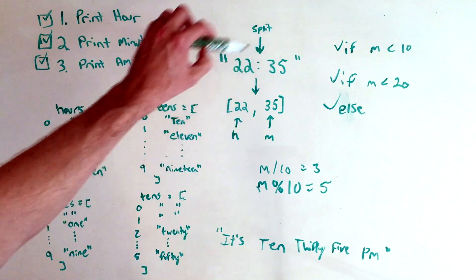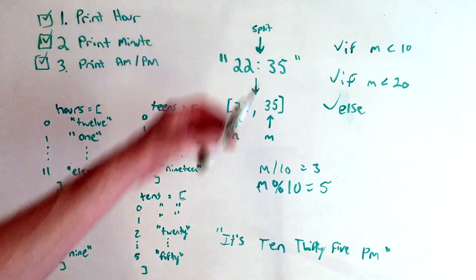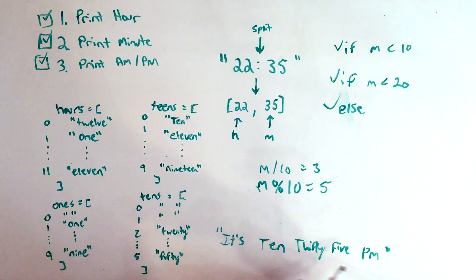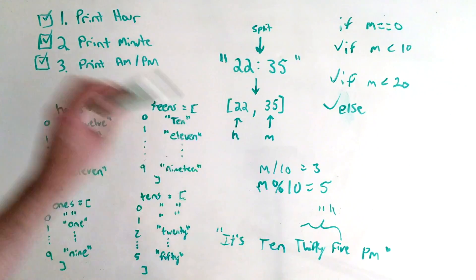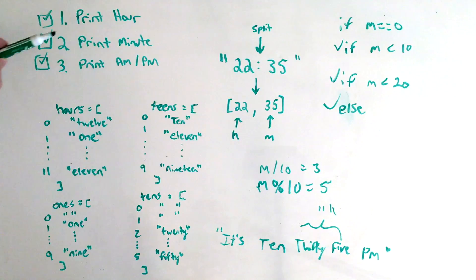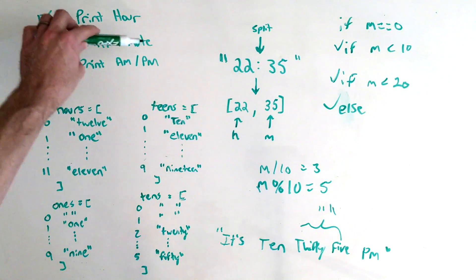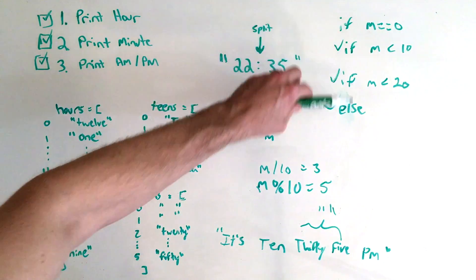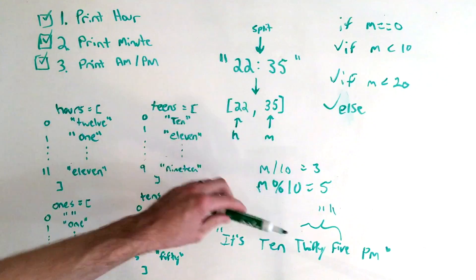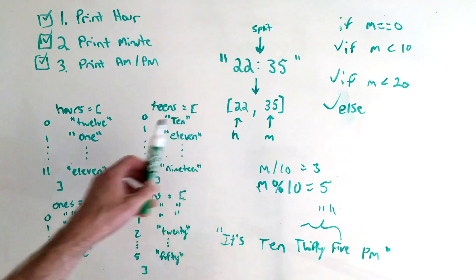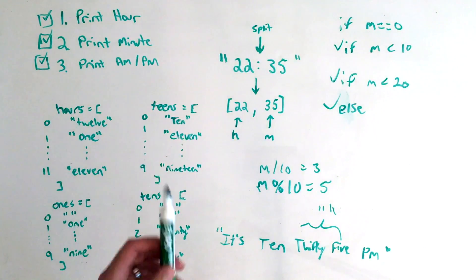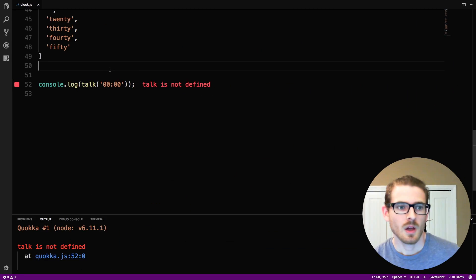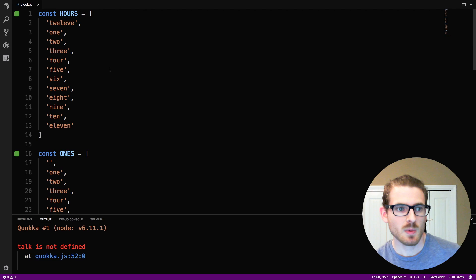So for the single input 22 colon 35, we get the output 'it's ten thirty-five p.m.' Hopefully this is a good overview of how to break this down into sub-problems, and how to break down sub-problem two — print minute — into the different cases. There's probably a different way to do this, but this is the easiest that comes to mind. Now let's implement this in JavaScript.